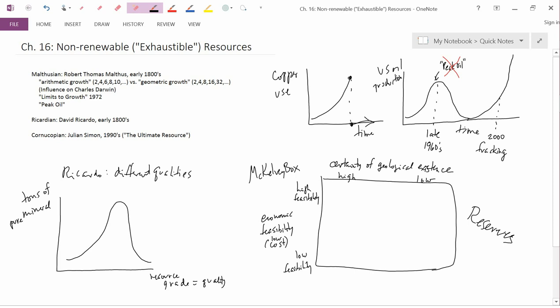I'm sorry, the whole box is resources. The upper left are reserves. In the upper left, you have high feasibility, which is low cost, and a fairly high certainty of geological existence. So those we call reserves. The entire box is resources.